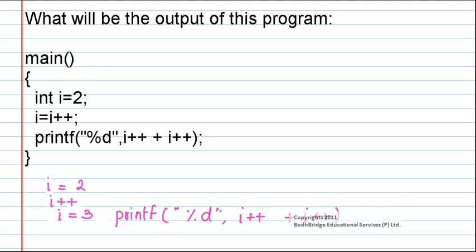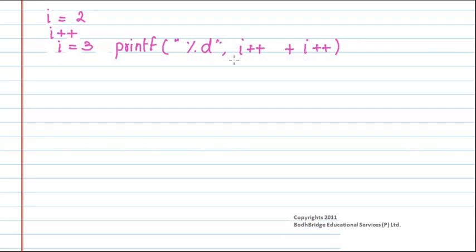Now let us take this separately and evaluate, so i++ plus i++. According to the precedence of operators in C language, the increment operators will be executed first before the addition operator. So now the value of i is 3.